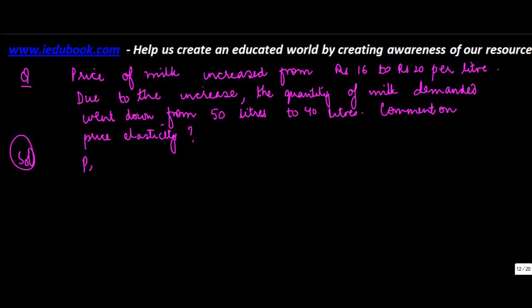Now, for price elasticity, we know ED is equal to Delta Q upon Delta P. The first price was 16, price 2 was 20, so Delta P will be equal to 20 minus 16.